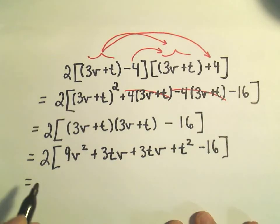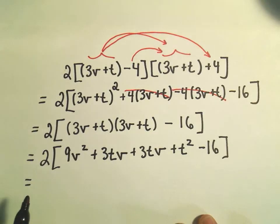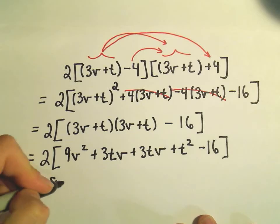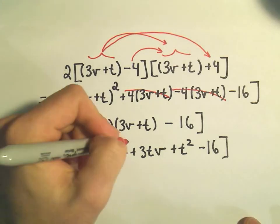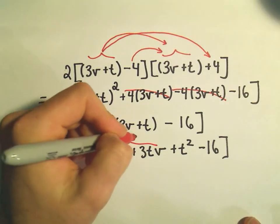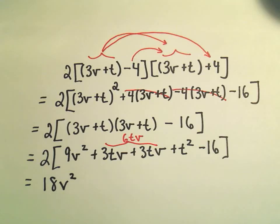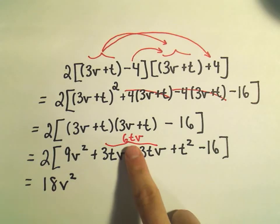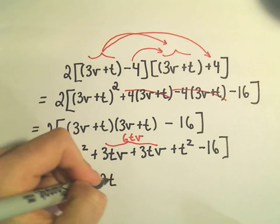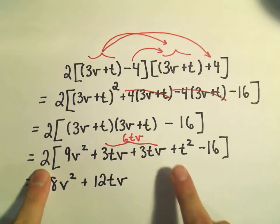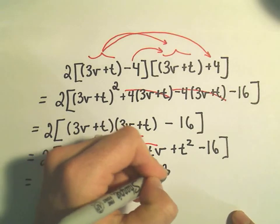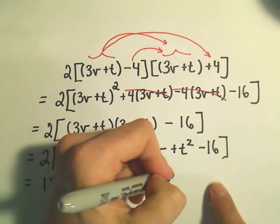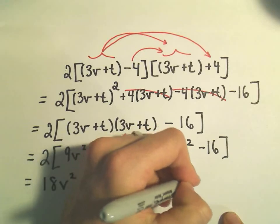And at this point, I'm going to do a couple steps at once. So we would have 2 times 9v squared, that would give us 18v squared. Notice if we combine the 3tv and the 3tv, that would give us a 6tv. When we multiply that by the 2, we would get a positive 12tv. And then we take the 2 times the positive t squared, that'll give us 2t squared. Then we have positive 2 times negative 16, that'll give us negative 32.